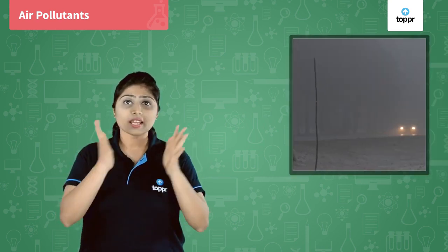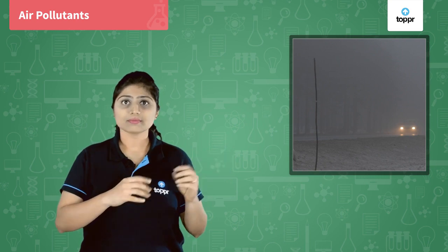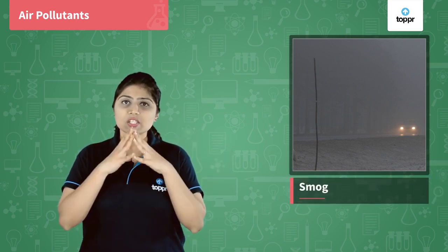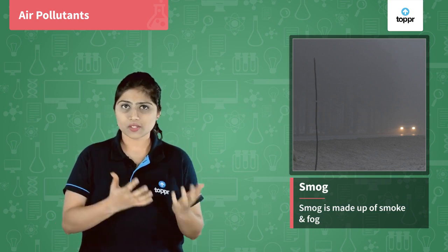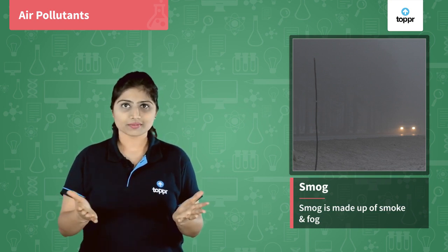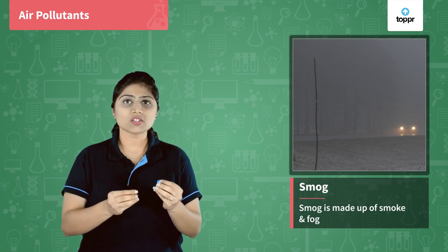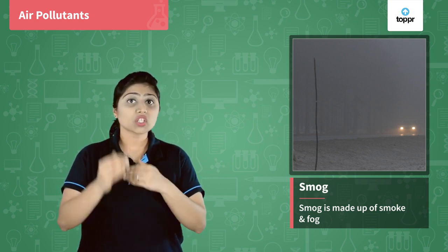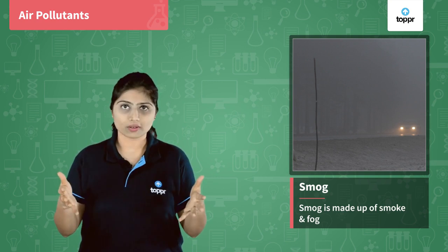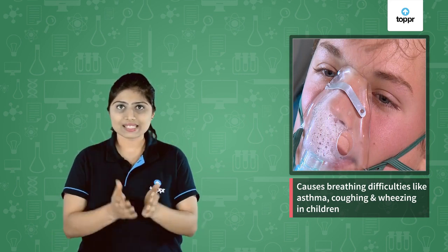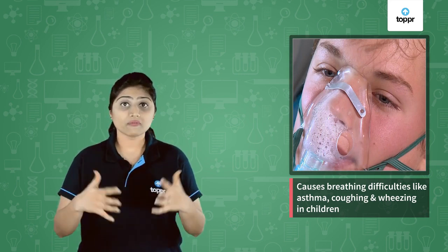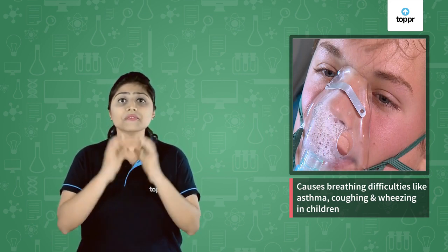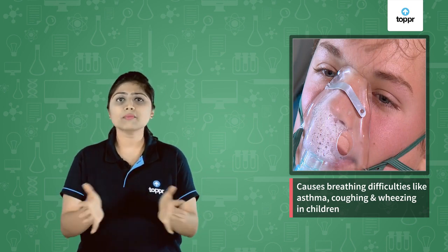During winter, we see a thick fog-like layer in the atmosphere called smog. Smog is made up of smoke and fog — smoke contains oxides of nitrogen which combine with fog to produce smog. Smog causes breathing difficulties like asthma, coughing, and wheezing in children, among many other problems.